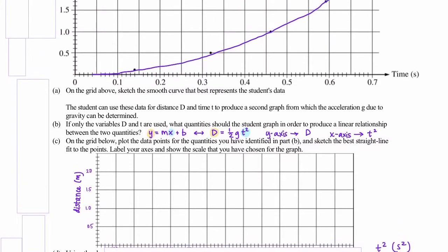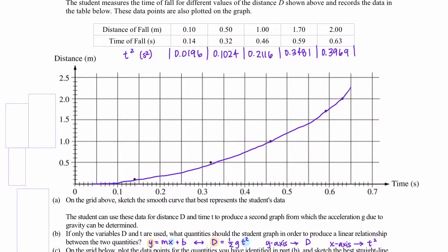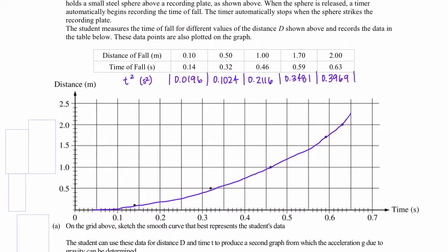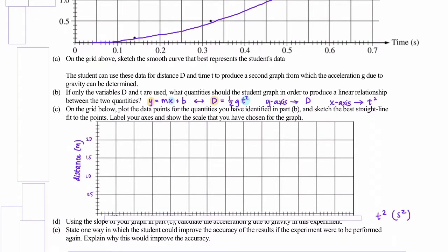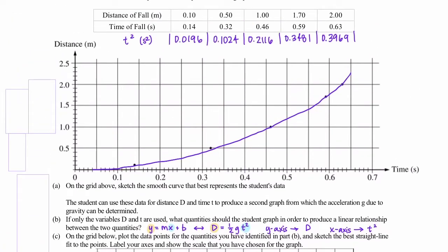Along the x-direction, our time squared values range from 0.0196 all the way up to nearly 0.4. And we have 14 grid spaces along the horizontal direction. So one thing you can do is take 0.4, because we want at least our data, 0.39, to fit on our data table. We can round that up to 0.4 and divide it by 14. If we round it up to 0.42, that evenly divides by 14, and 0.42 divided by 14 is equal to 0.03.